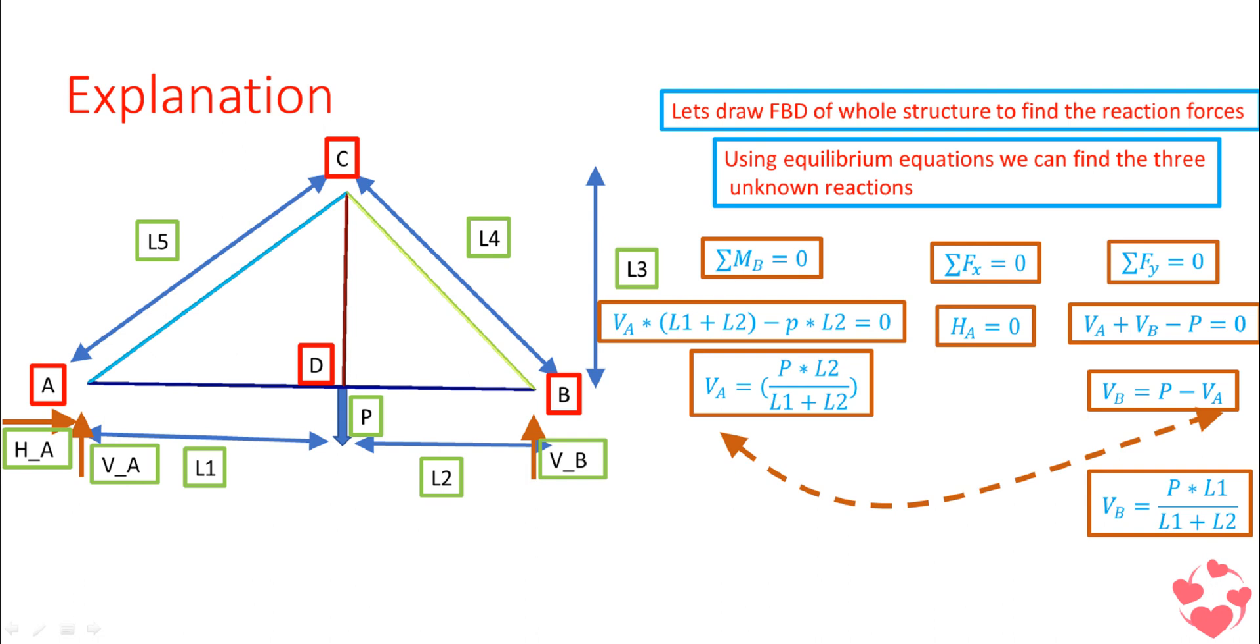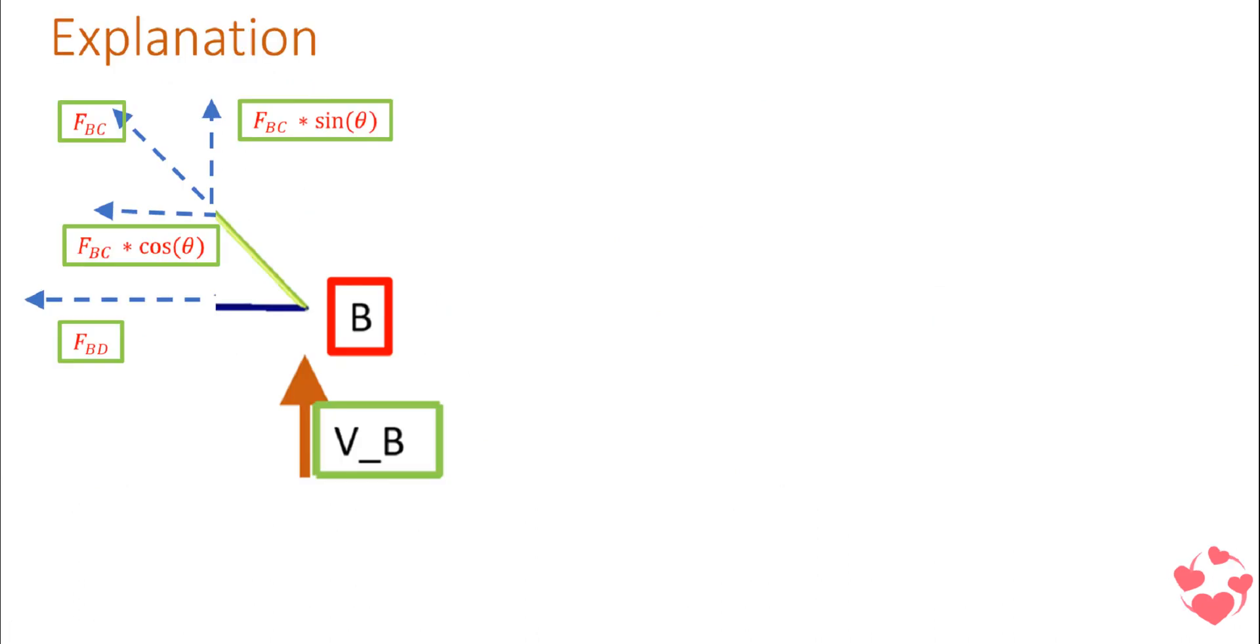Let's take a force balance at the joint. This is called method of joints, in which we impose the equilibrium conditions at the joint. Here we need to find the forces in BC and BD. First, we need to resolve the forces, and then we will apply the equilibrium conditions.